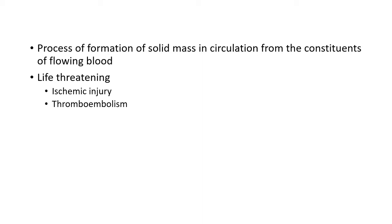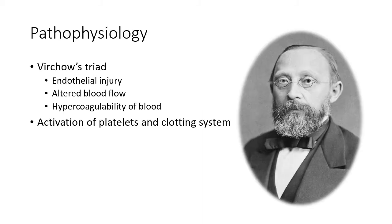Ischemic injury was covered in our cell injury video. Thrombosis can cause ischemia or infarction of some organ or tissue. Thromboembolism is when the thrombus — the solid mass formed, so named from the process thrombosis — or part of it gets dislodged, is carried along in the bloodstream, and lodges in a distant vessel, blocking it. These two are the life-threatening harmful effects of thrombosis.